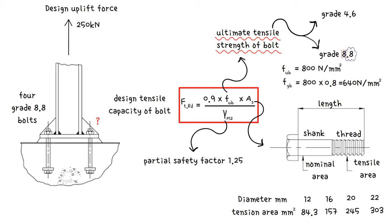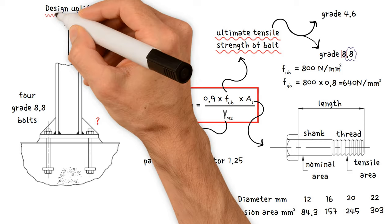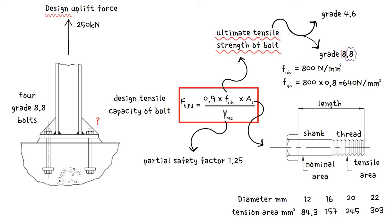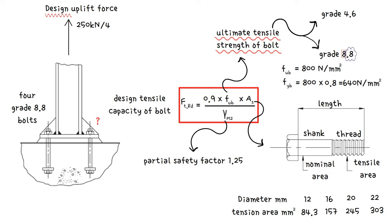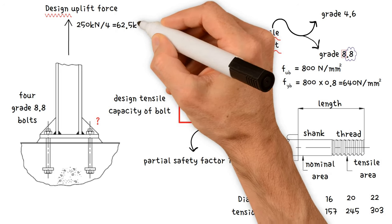Bear in mind, the uplift load 250 kN is stated as the design force and hence already includes partial safety factors for loads. So, load per bolt equals 250 kN divided by number of bolts, which is 4. This gives us a value of 62.5 kN.